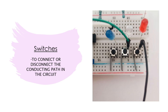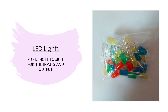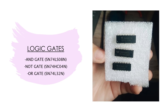A resistor of 100 ohm is used to provide resistance or limit the flow of electric current. I used some switches to connect or disconnect the conducting path in the circuit. Also, colorful LED lights to denote logic 1 for the inputs and also the output. The most important components are the logic gates — I used NAND gate, NOT gate, and OR gate.